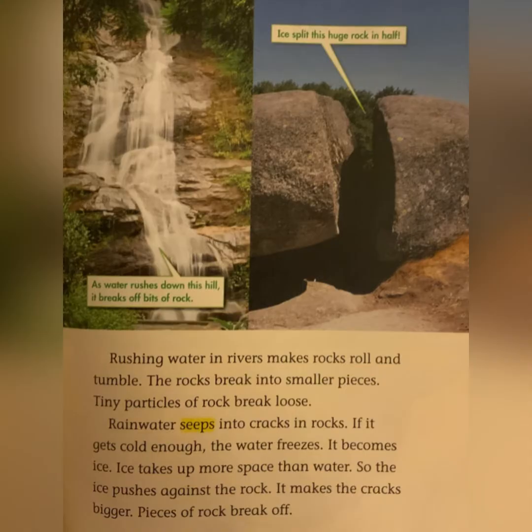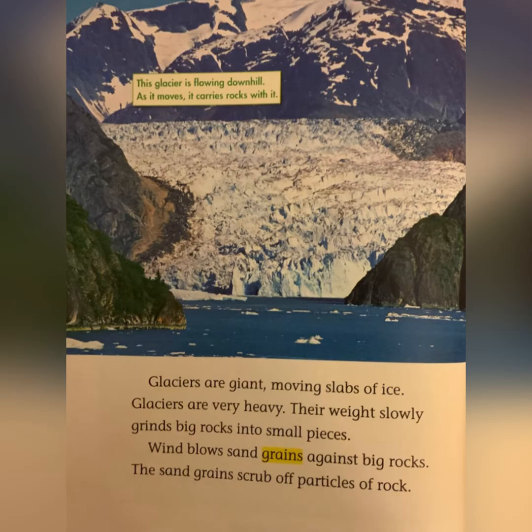When water gets into a rock's cracks and becomes ice, it takes up more space than water, so the ice pushes against the rock, making the cracks bigger until pieces of the rock break off. Glaciers are giant moving slabs of ice. Glaciers are very heavy, and their weight slowly grinds big rocks into small pieces.